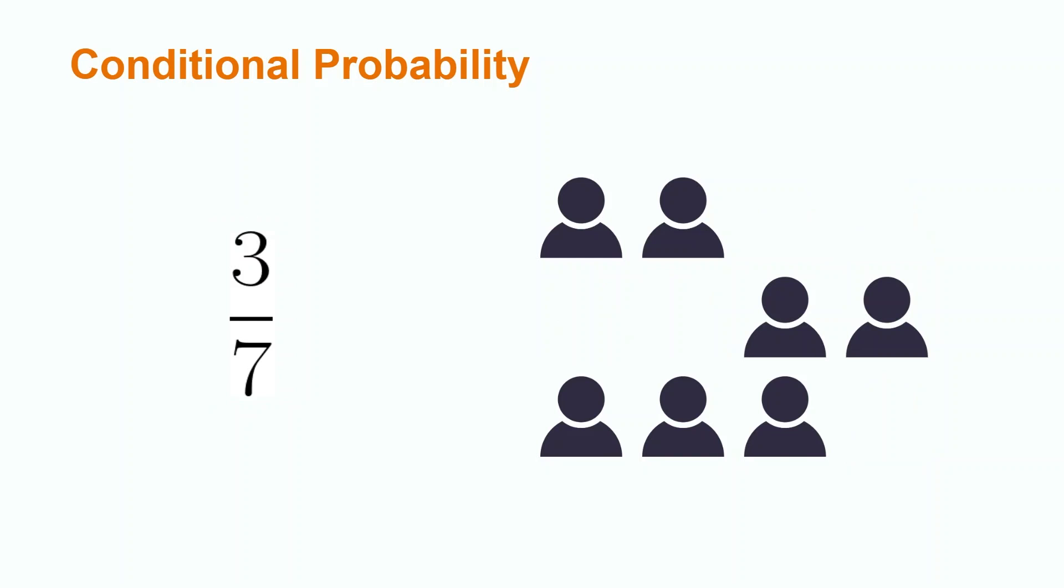For example, the statement, given that our opponent's character is a blonde female, what is the probability that our opponent's character has glasses? If we have 7 blonde females in the game and 3 of them have glasses, this probability will be 3 out of 7.